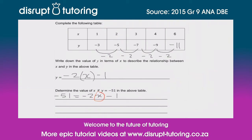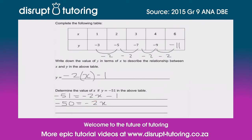We need to solve for x using the rules for algebraic equations. We need to get x by itself, so we take the minus 1 and shift it across by adding 1 to both sides. That gives us -50 = -2x. Next, divide both sides by -2: a negative divided by a negative gives a positive, and 50 divided by 2 gives 25. So x = 25.